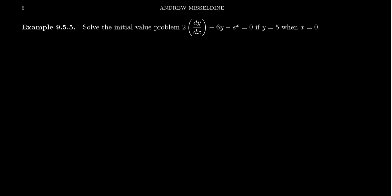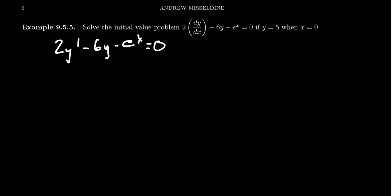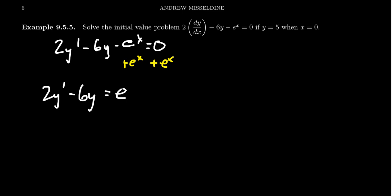Let's look at another example without all the details laid out from the beginning. Take the differential equation 2y prime minus 6y minus e to the x equals 0, with some initial values — we're solving an initial value problem. This is a linear first-order differential equation. To put it in standard form, add e to the x to both sides to get 2y prime minus 6y equals e to the x, then divide everything by 2 to get y prime minus 3y equals 1/2 e to the x.